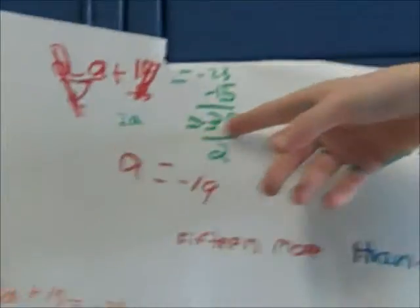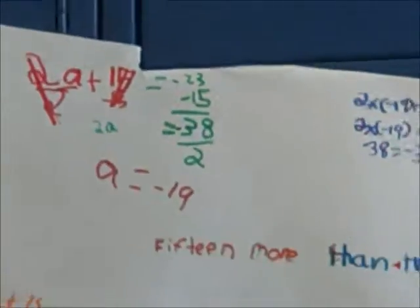You do 15 minus 15, and it's negative 23 minus 15 equals negative 38. So 2a equals negative 38.